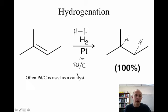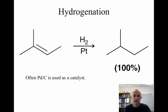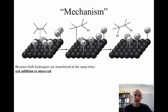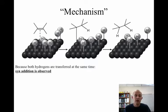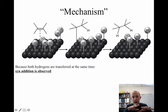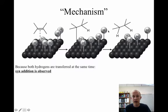Why do you need the transition metal — why platinum or palladium? That's going to help us understand the mechanism and stereochemistry. The mechanism is difficult to describe using curved arrows because it happens on the surface of the metal, which makes it a heterogeneous reaction. When hydrogen gas combines with the transition metal, the H–H bond breaks and hydrogen atoms sit on the metal surface. The alkene absorbs those hydrogens extremely rapidly, so both hydrogens transfer at the same time, giving syn addition — much like hydroboration-oxidation.